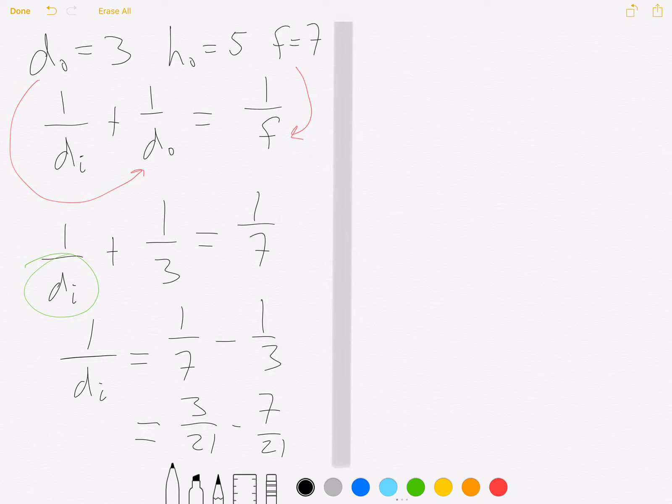Because 1 over 7 times 3 over 3 gives us a common denominator of 21, and 1 over 3 times 7 over 7 gives us 7 over 21. Now we can subtract, so 1 over di will be negative 4, because 3 minus 7 is negative 4, over 21.